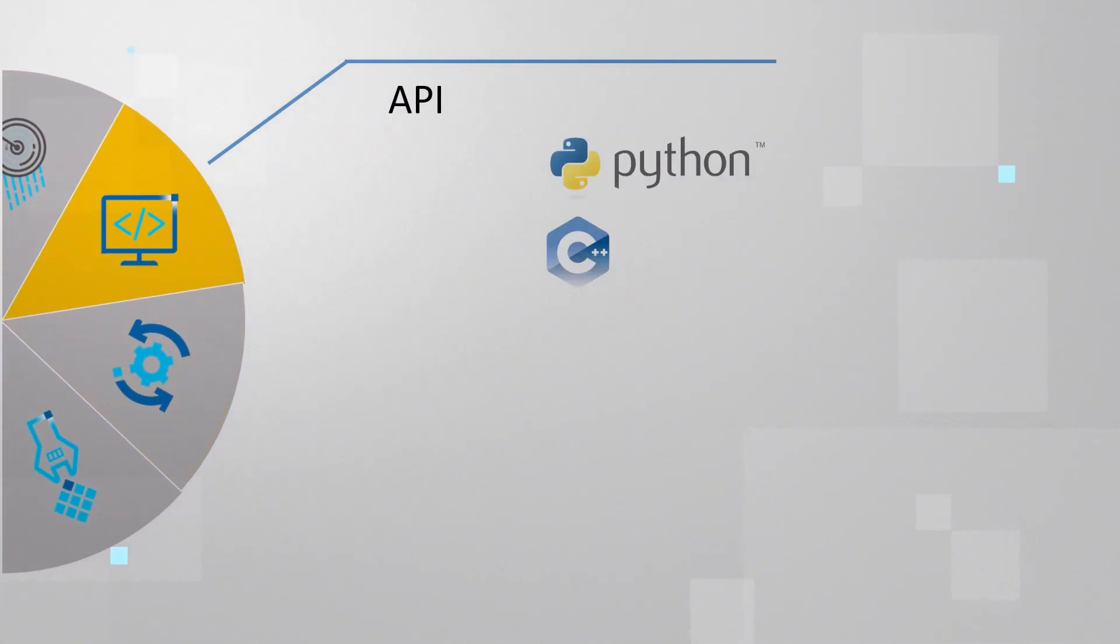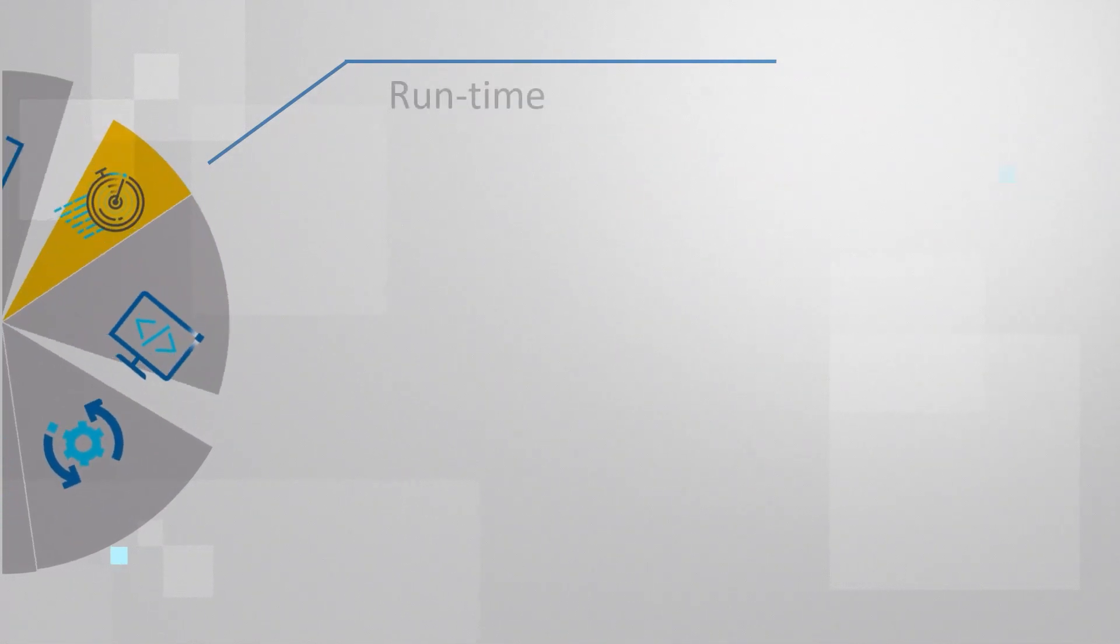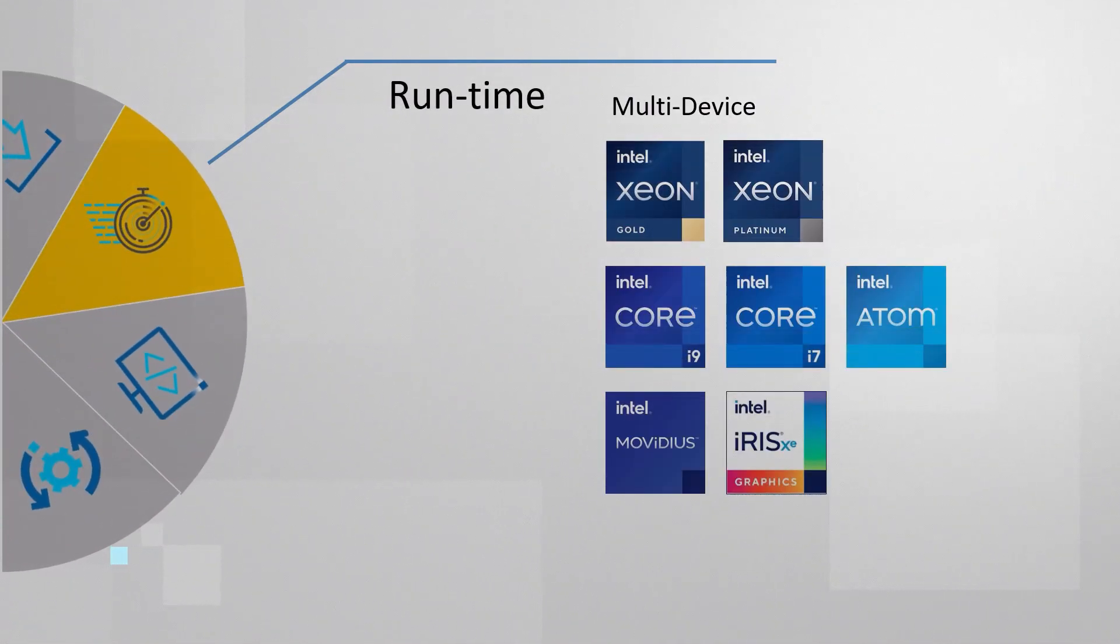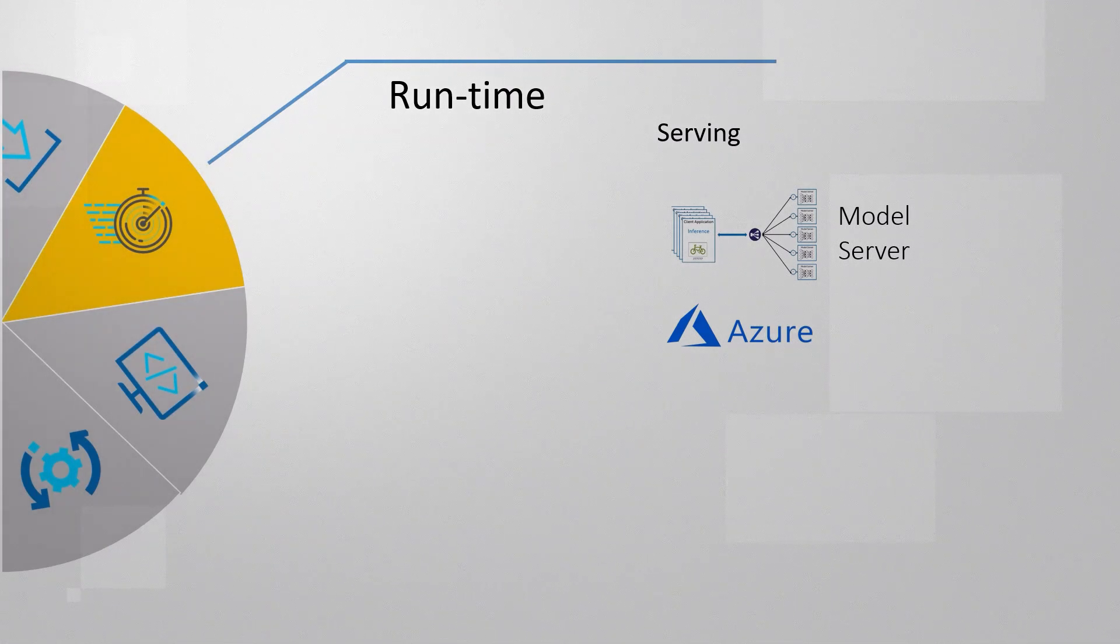OpenVINO code could be written in Python, C++ or C. We have tons of sample code you can use as a reference or as a demo. And the inference engine runtime can take your model and run it efficiently on multiple devices, CPUs, GPUs, FPGAs and more. When you're ready to build a serving application, we have the ready tools to easily do that. Or you could use Microsoft Azure with OpenVINO integrated as an inference engine.